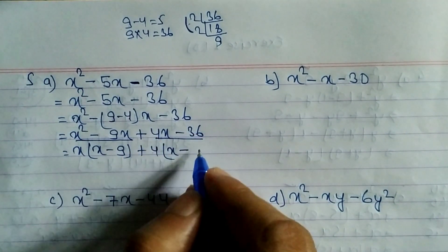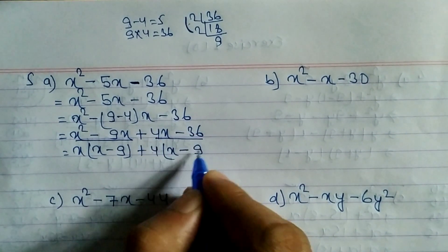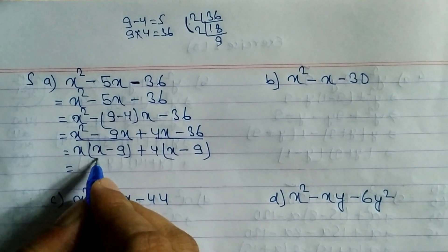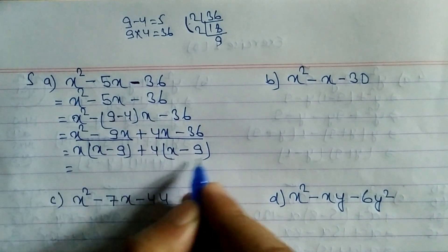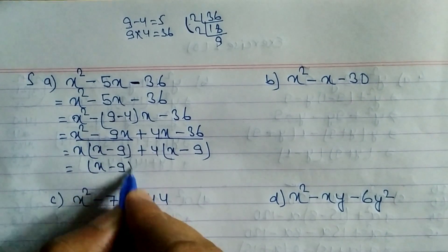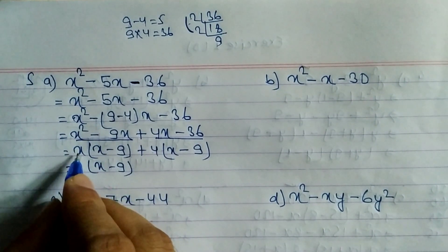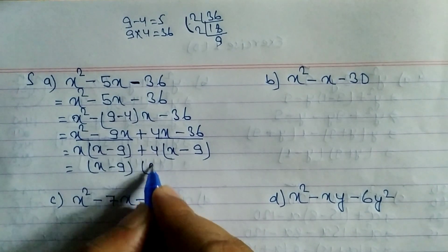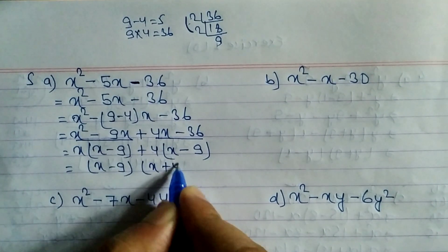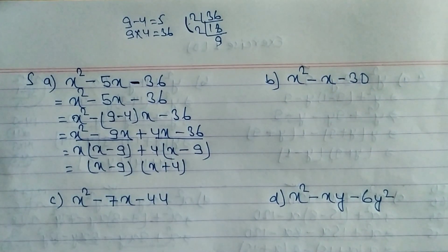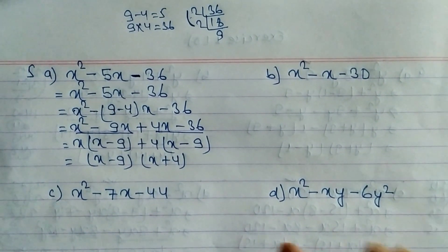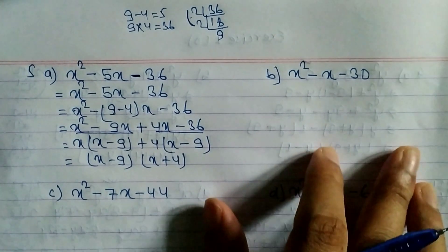Now we can take (x - 9) as common from both groups, and the remaining factor is (x + 4). So the final answer is (x - 9)(x + 4). Hope you understand this question.